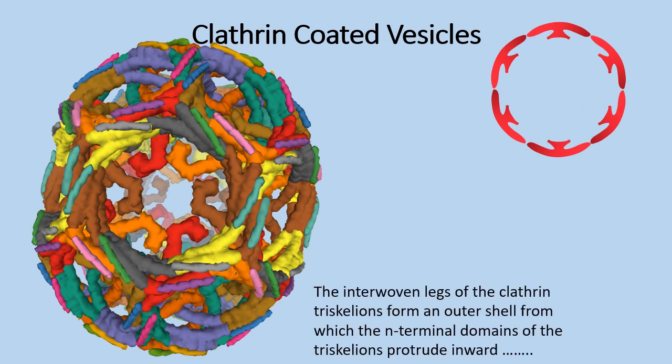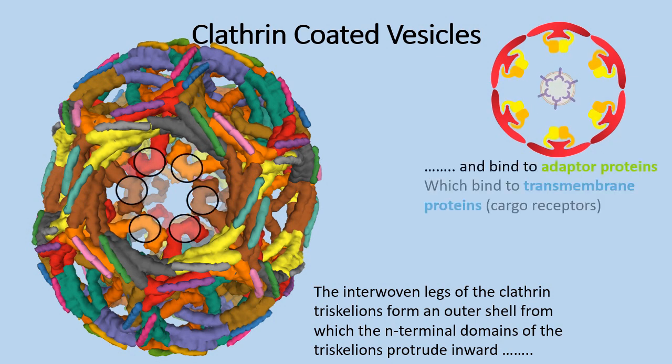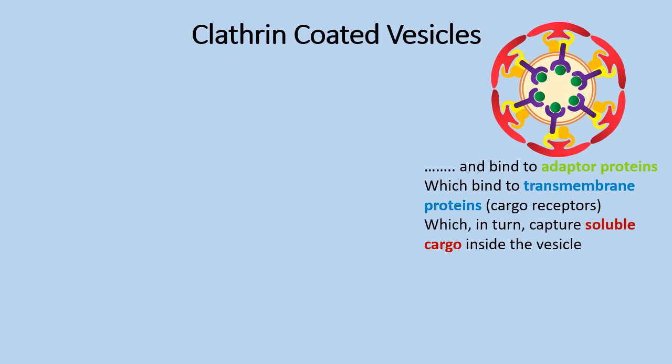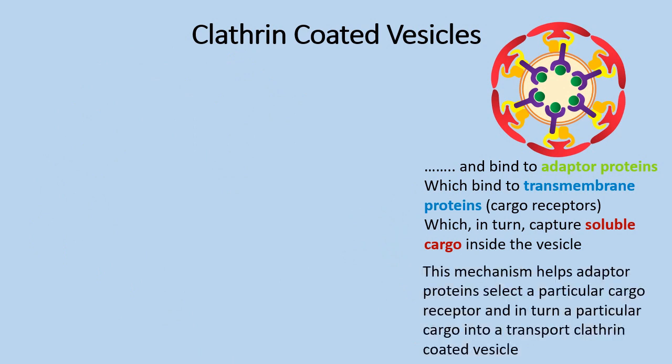The interwoven legs of clathrin triskelion form an outer shell from which terminal domains of triskelion protrude inward and bind to the adapter protein which bind to the transmembrane protein, also called cargo receptors, which in turn capture soluble cargo inside the vesicle. This mechanism helps adapter proteins select a particular cargo receptor and in turn a particular cargo into a transport clathrin coated vesicle.